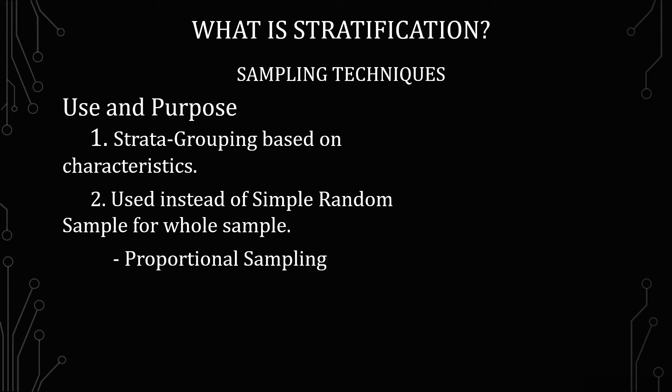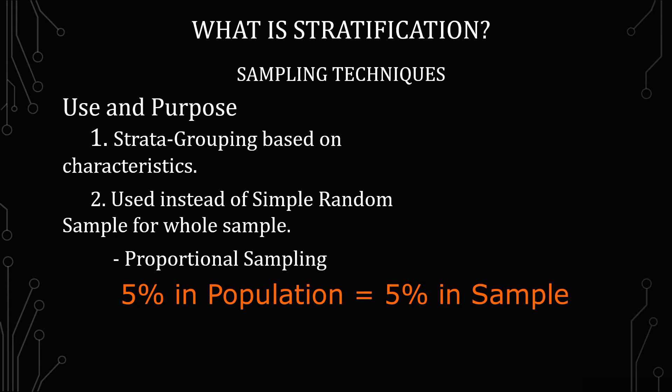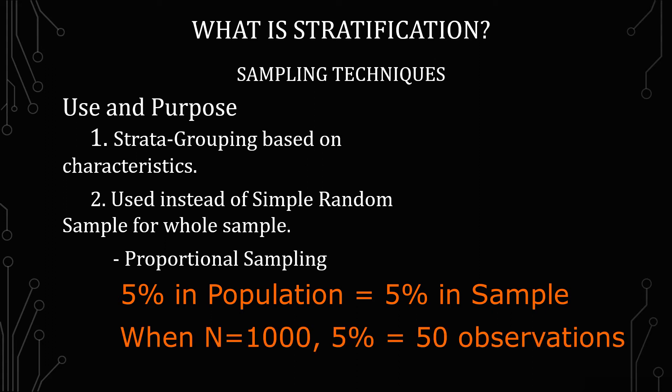The way you achieve correct proportions is by using proportional sampling, where you understand there's a distribution of income levels and you use that distribution — whether from a census or a larger survey — and apply that same proportion to your sample, ensuring you have an appropriate sample to reflect what's going on in the population. If you're surveying 1,000 people and you want to make sure you have that 5%, that means you are guaranteeing 50 people to be sampled.